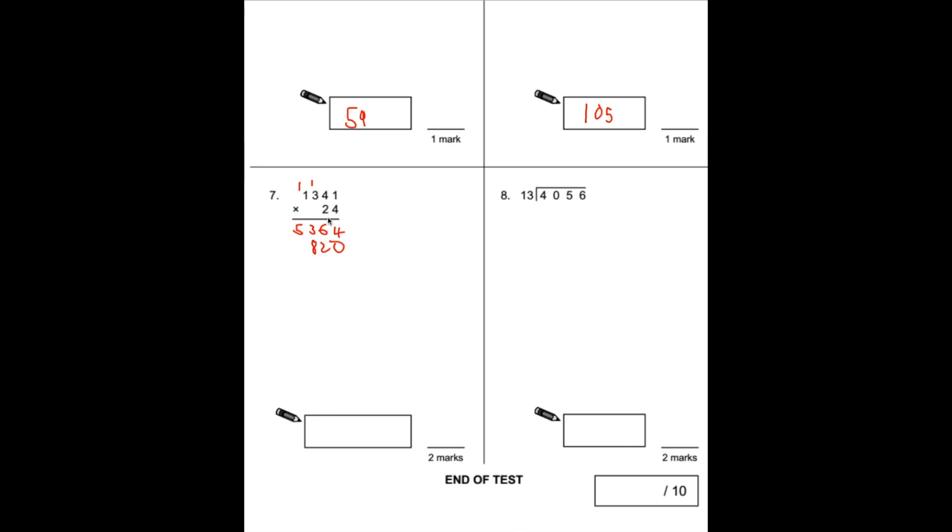Now we're moving on to the 20 times this number, so we need to put our placeholder. 2 times 1 is 2, 2 times 4 is 8, 2 times 3 is 6, 2 times 1 is 2. Then we add these numbers together: 4 add nothing is 4, 6 add 2 is 8, 3 add 8 is 11, put the 1, carry the 1. 5 add 6 is 11, add the 1 again is 12. 1 add 2 is 3. So our answer is 32,184.